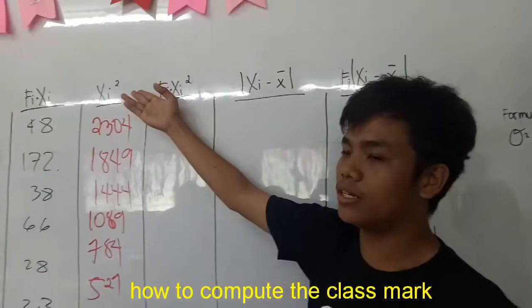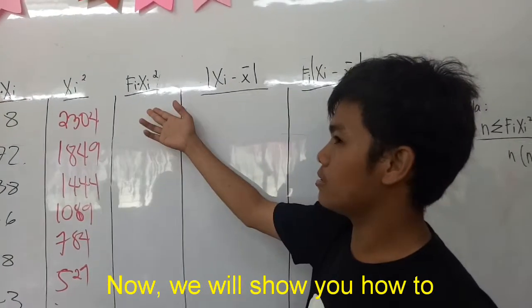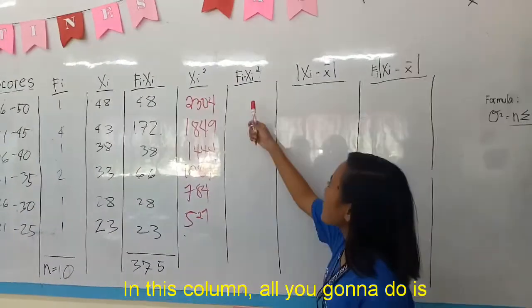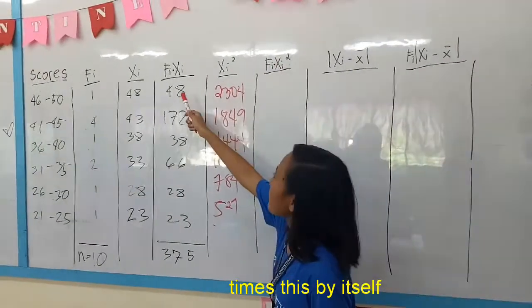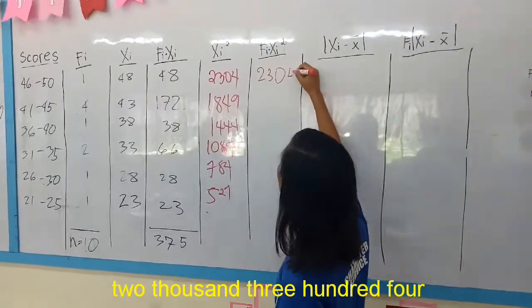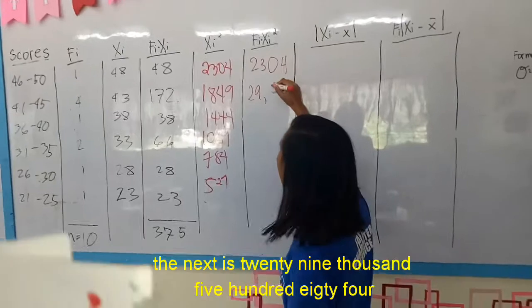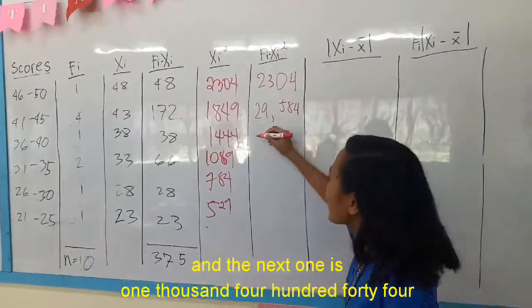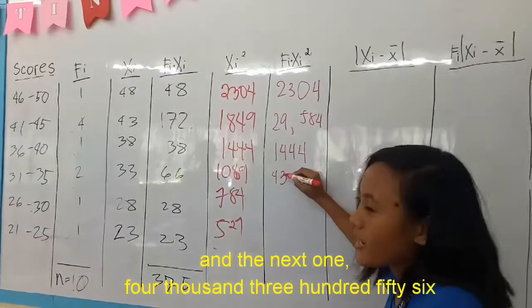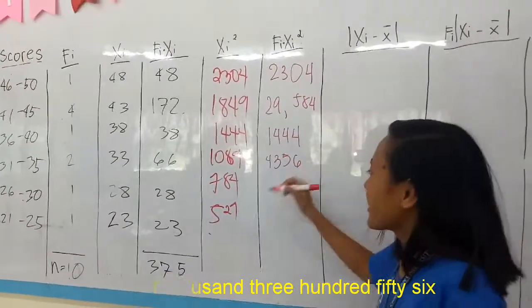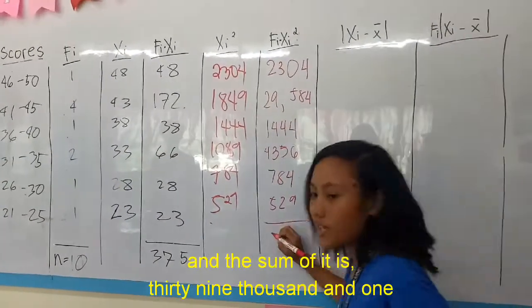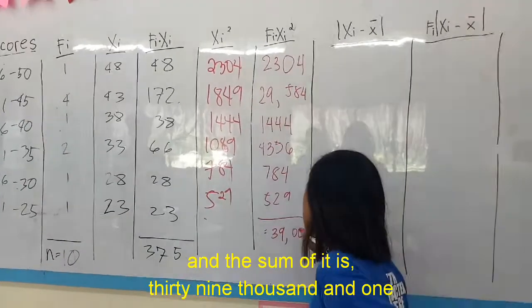Now you have to compute the class mark squared. Now we will show you how to compute the frequency by class mark squared. In this column, all we are going to do is multiply the frequency by the class mark squared. So 1 times 2,304 is 2,304. And the next is 4 times 1,849 is 7,396. Then the next one is 1 times 1,444 is 1,444. And the next one is 2 times 1,089 is 2,178. And the last two are 1 times 784 is 784 and 1 times 529 is 529. And the sum of it is 39,001.